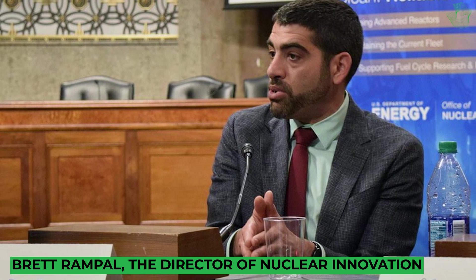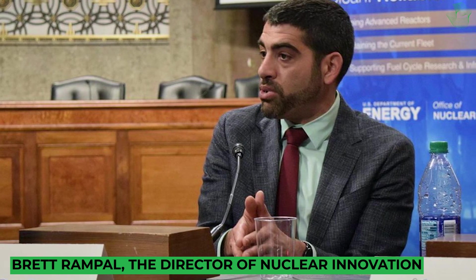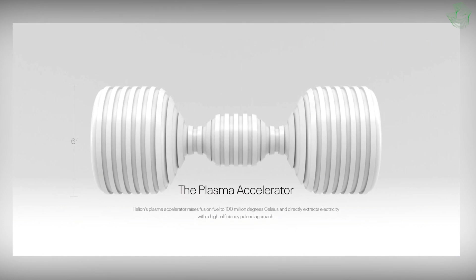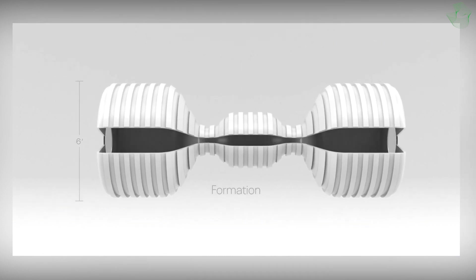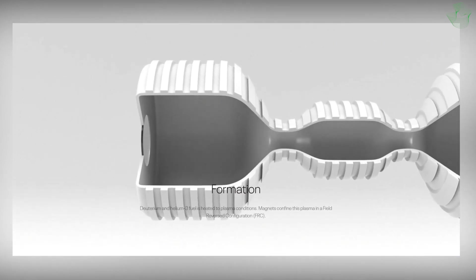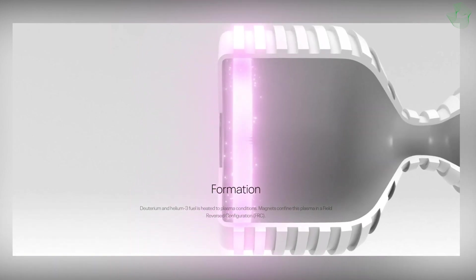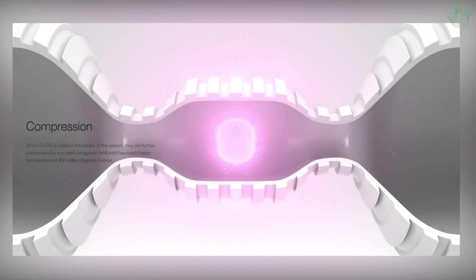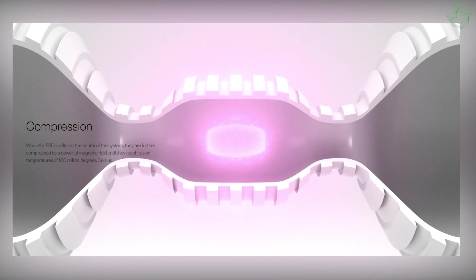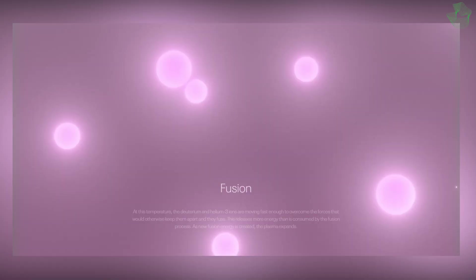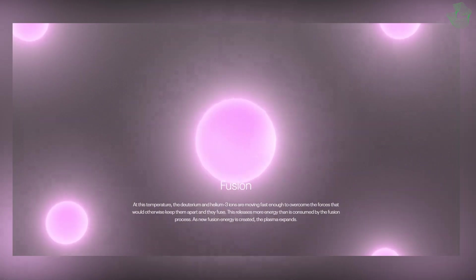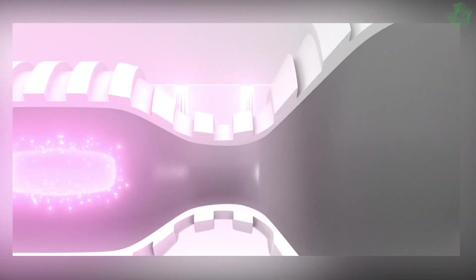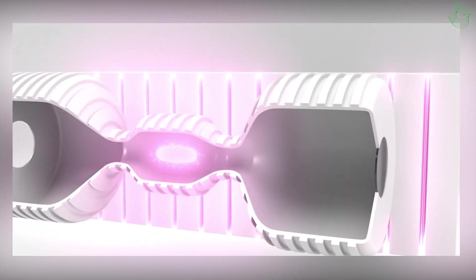According to Brett Rampal, the director of nuclear innovation at the nonprofit Clean Air Task Force, Helion Energy uses anutronic fusion, which means they don't have a lot of high energy neutrons present in their fusion reaction. Anutronic fusion still has some unanswered questions, according to Rampal. Anutronic techniques, like the one Helion Energy is exploring, may have advantages that other systems do not. But they may also have disadvantages and difficulties in producing fusion energy commercially.